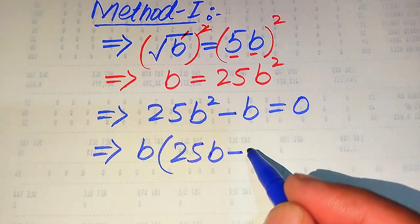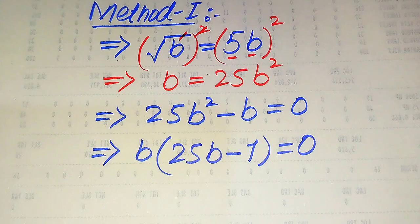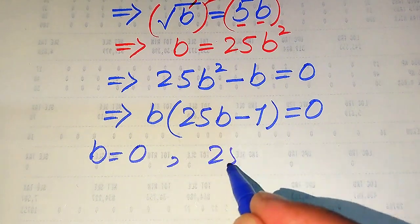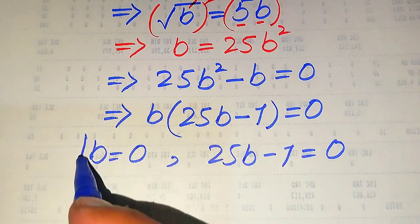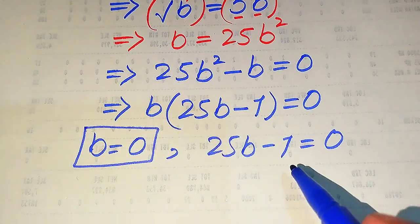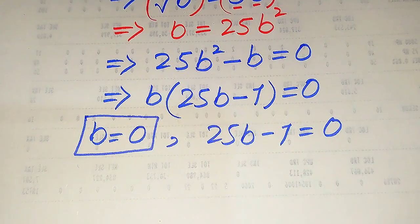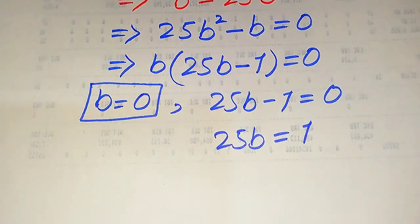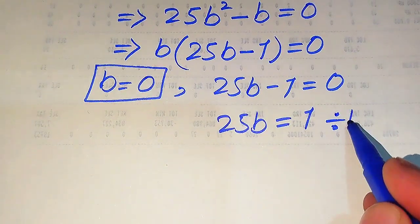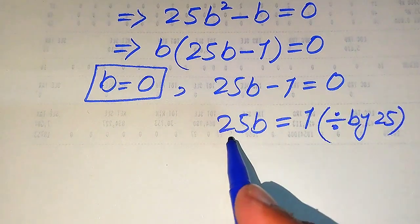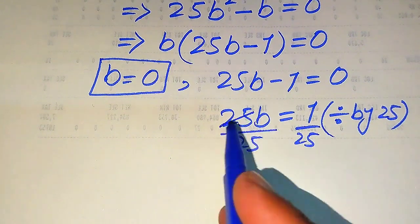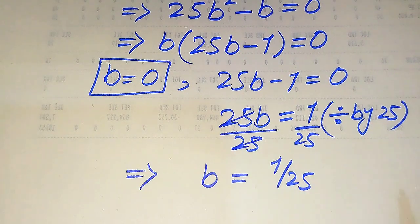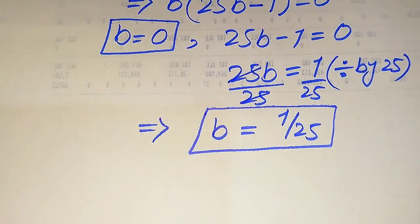We factor this equation by taking B common: B times (25B minus 1) equals 0. This gives two cases. The first case is B equals 0, and the second case is 25B minus 1 equals 0. Moving minus 1 to the right gives 25B equals 1, then dividing both sides by 25 gives B equals 1 over 25.